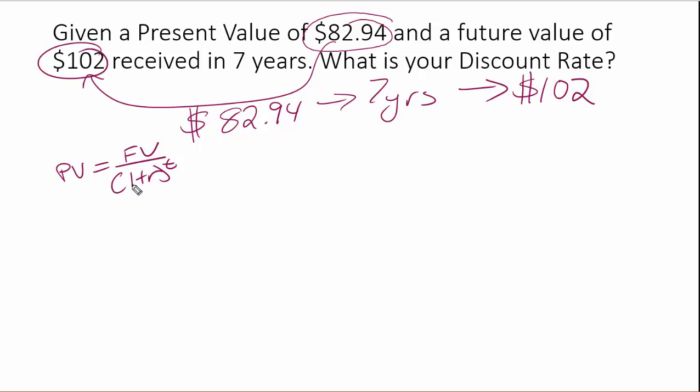We're solving for discount rate, the interest rate. So we're going to have this $82.94 is equal to the $102 divided by one plus R raised to the seventh power.